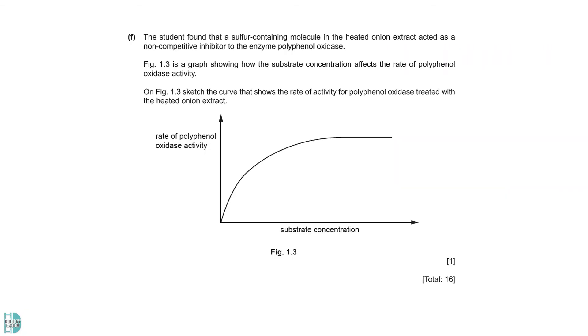F says that a sulfur-containing molecule in the heated onion extract acted as a non-competitive inhibitor to the enzyme. You are asked to sketch the curve that shows the rate of activity for polyphenol oxidase treated with the heated onion extract. A non-competitive inhibitor lowers the VMAX and the rate of reaction. So, this new line should be lower than the first one and has a lower VMAX.